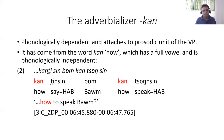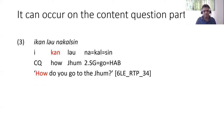Some basic characteristics of the adverbializer khan: it is phonologically dependent and attaches to the prosodic unit of the verb phrase. It comes from the word khan meaning 'how.' As you can see in an example: khan te sin bom kan tang sin / khan te sin bom kan chong sin — 'How do you speak Bom?' So khan means 'how.' It can also occur on the content question particle e, as in ikan leu nakal sin.